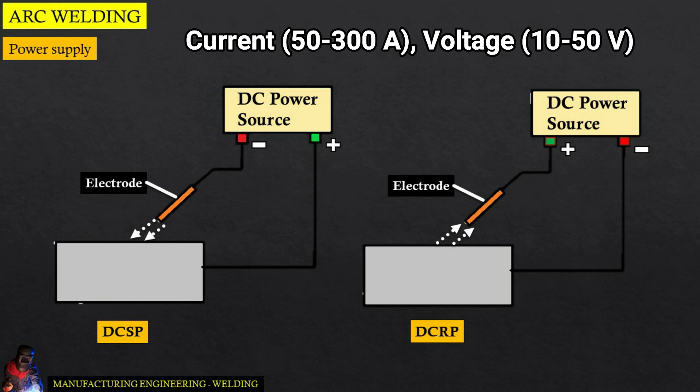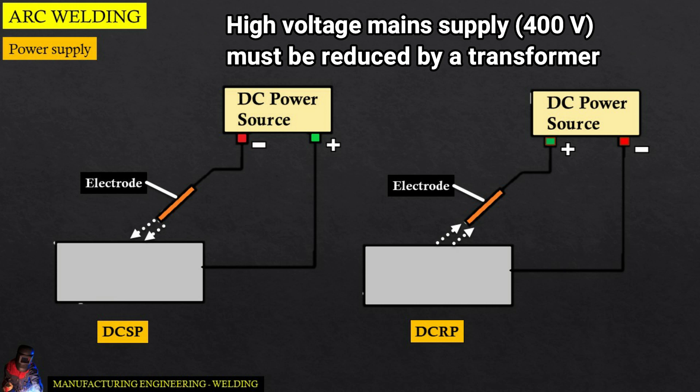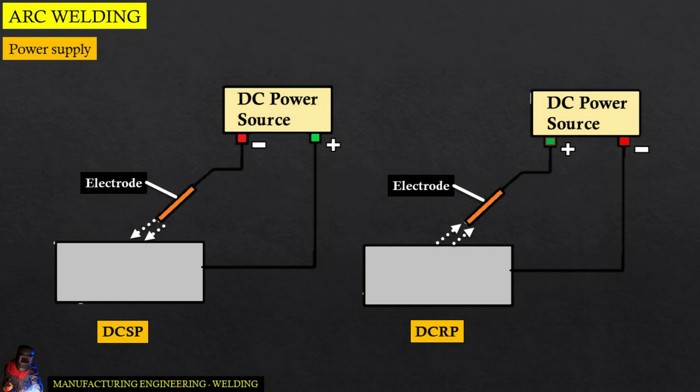The voltage required is 10 to 50 volts, so the high voltage main supply of 230 to 400 volts must be reduced by a transformer. There are three types of power supply in arc welding: DC SP, DC RP, and AC.